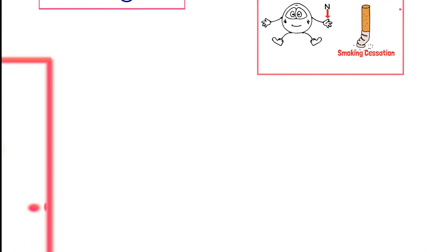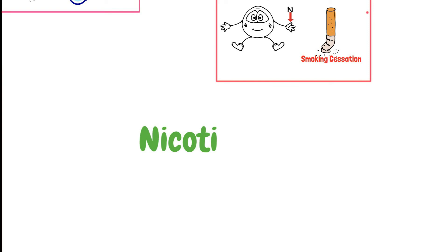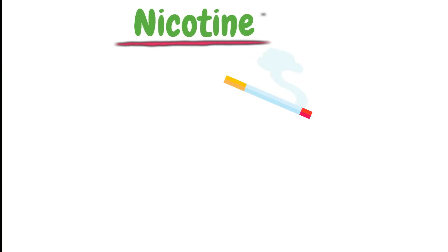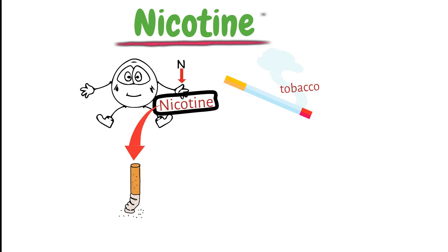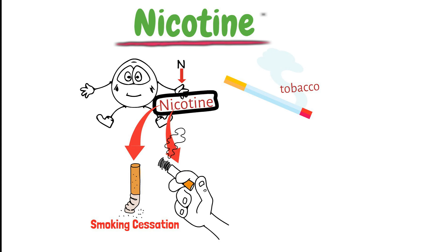The next one is nicotine. Nicotine is a main constituent of tobacco and has a strong affinity for only nicotinic cholinergic receptors — that's why these receptors are named nicotinic. Nicotine is mainly used for smoking cessation, while non-medical uses include smoking and insecticides.